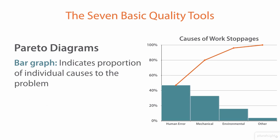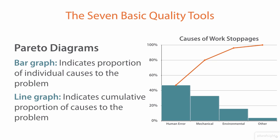The bar graph portion indicates the percentage of individual causes for the problem at large. For example, 45% of work stoppages can be attributed to human error, and a little more than 30% to mechanical failure, and so on. The line graph indicates the cumulative proportion of causes to the problem. Notice that the bar graph shrinks from left to right — the most likely categories are on the left and the least likely on the right. That's how a Pareto diagram is meant to display data, with the most common categories on the left to inform the cumulative line graph.